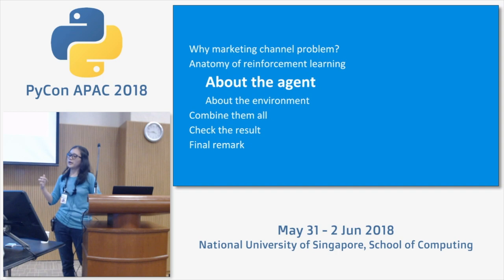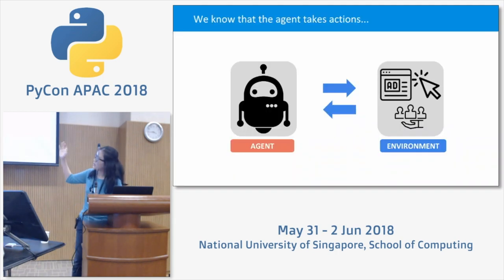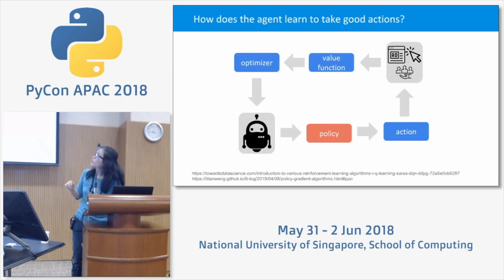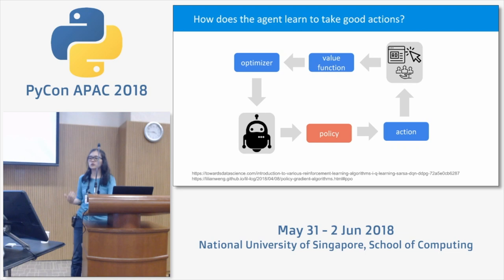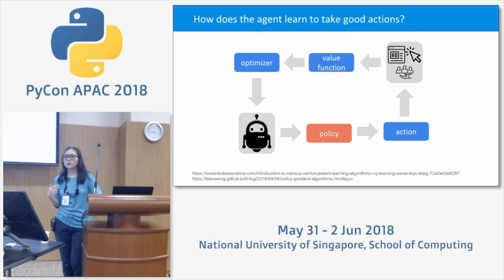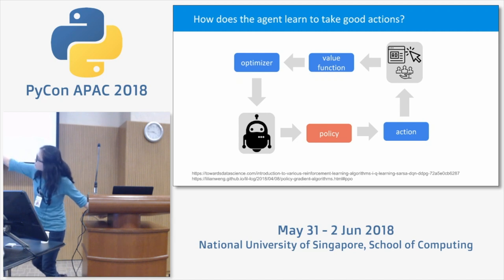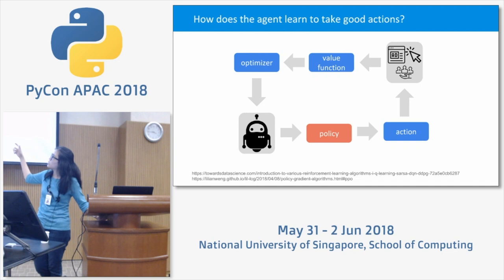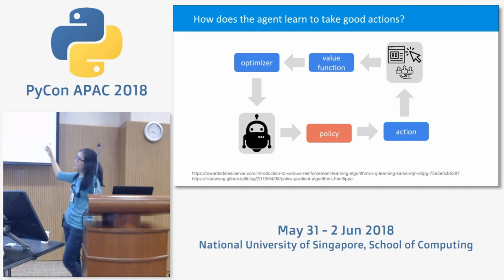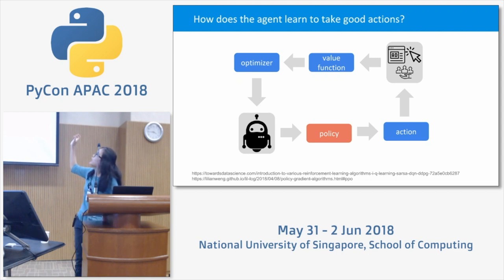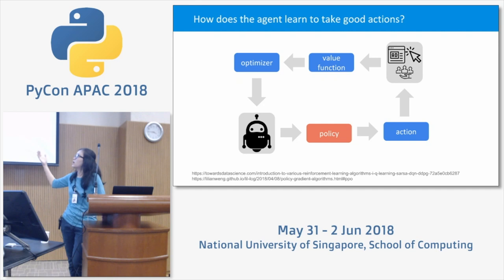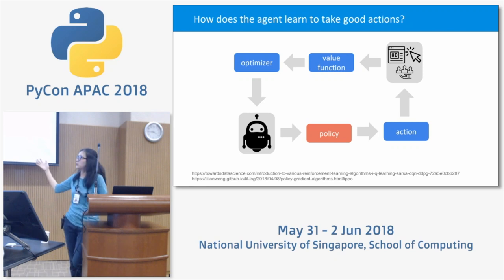Now let's learn about the agent — specifically the policy gradient method. The agent has a particular parameter used by the policy to take action. That action is implemented in the environment, which results in a particular value function. That value function is then used as the basis to optimize the policy parameter. That's my rough understanding of policy gradient.